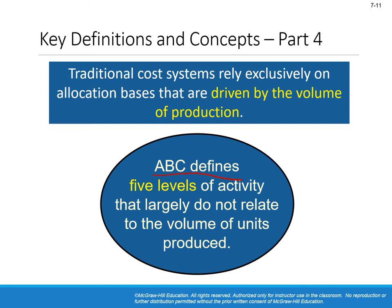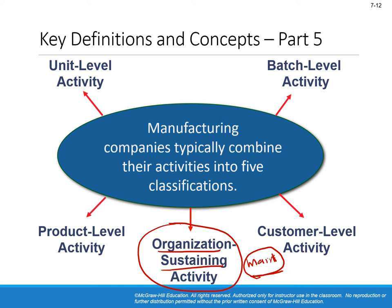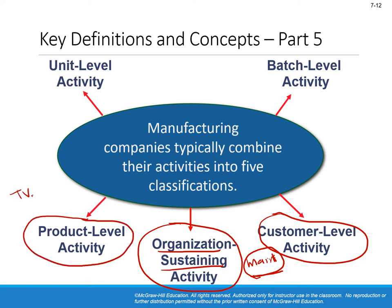ABC defines five levels of activity that largely do not relate to the volume of units produced. Starting with the highest: organization-sustaining activity, for example maintenance cost or the security guard's salary — these are indirect costs that go to overhead. Then customer-level activity, for example if you have 20 customers, maintaining a good relationship with those customers is an indirect cost for the company.